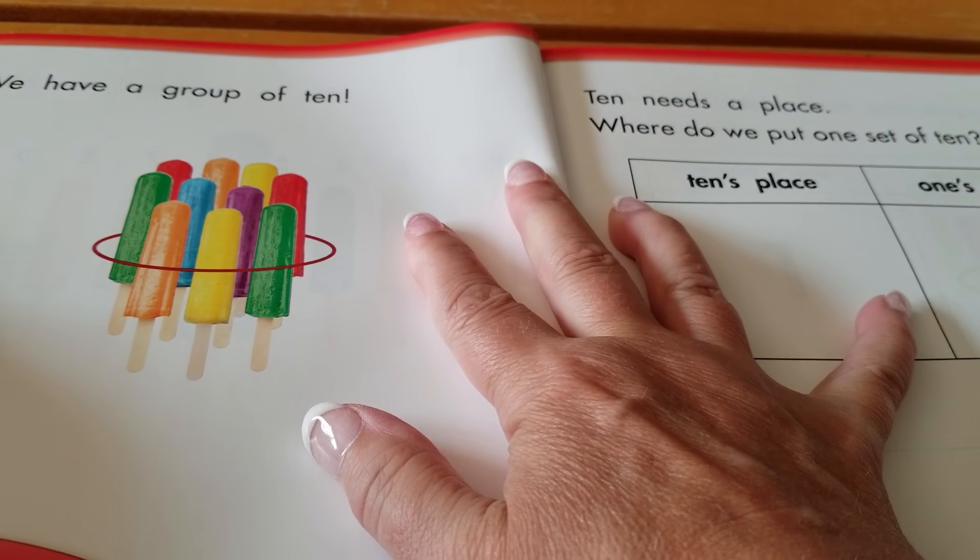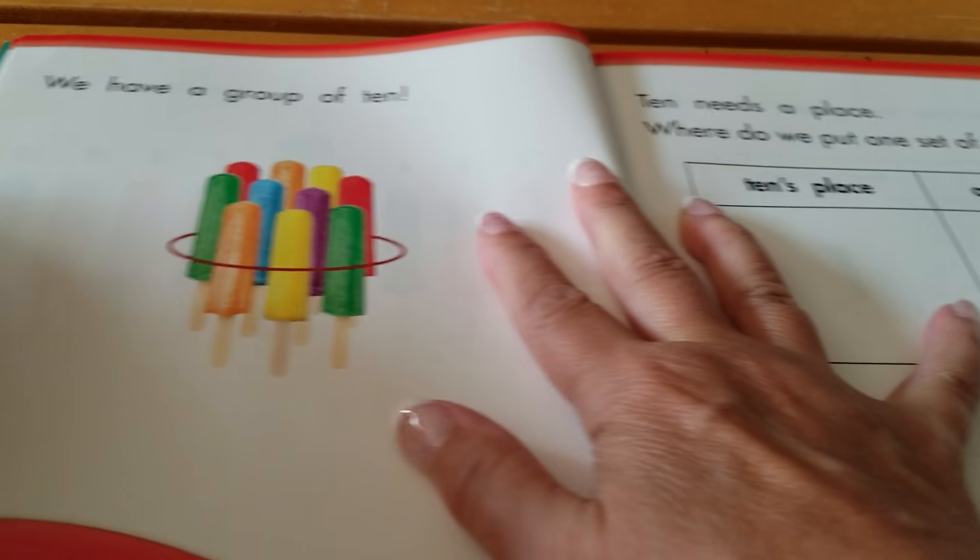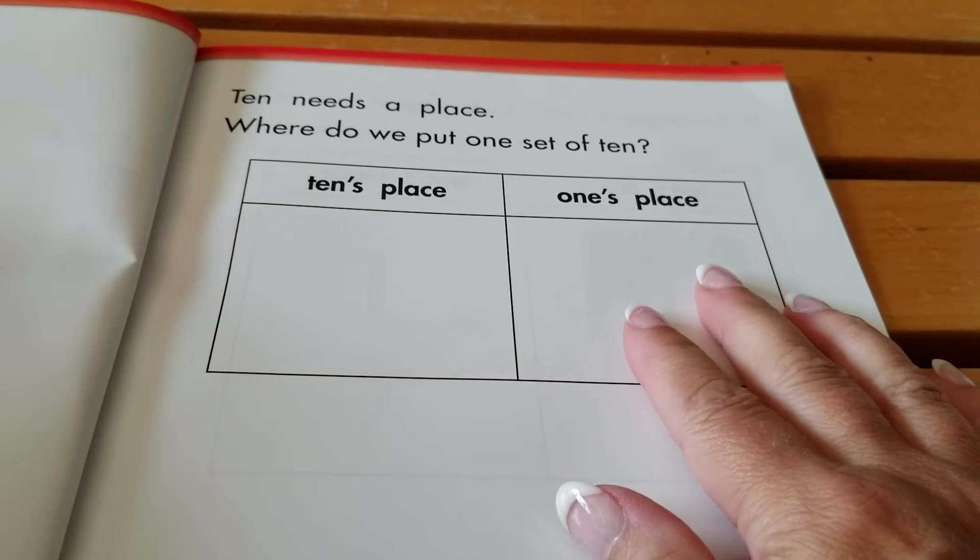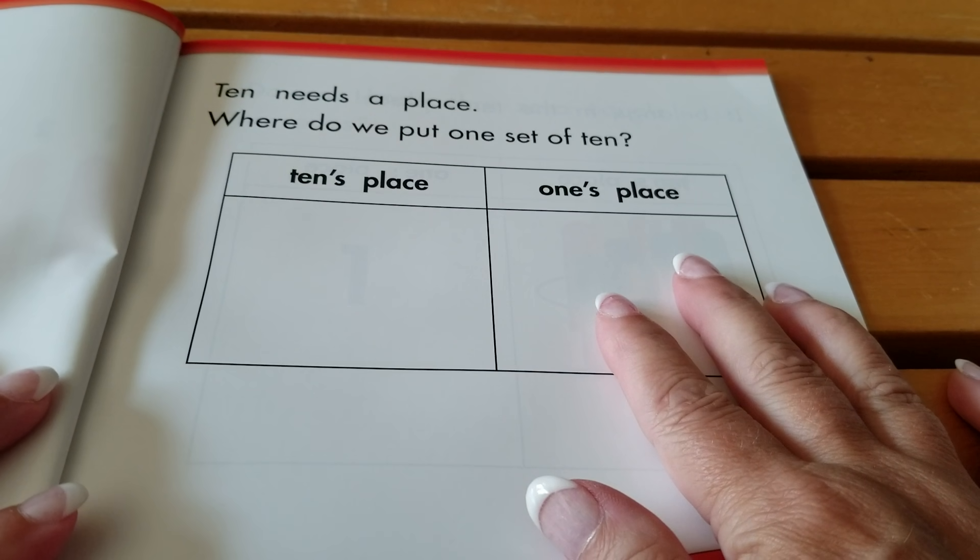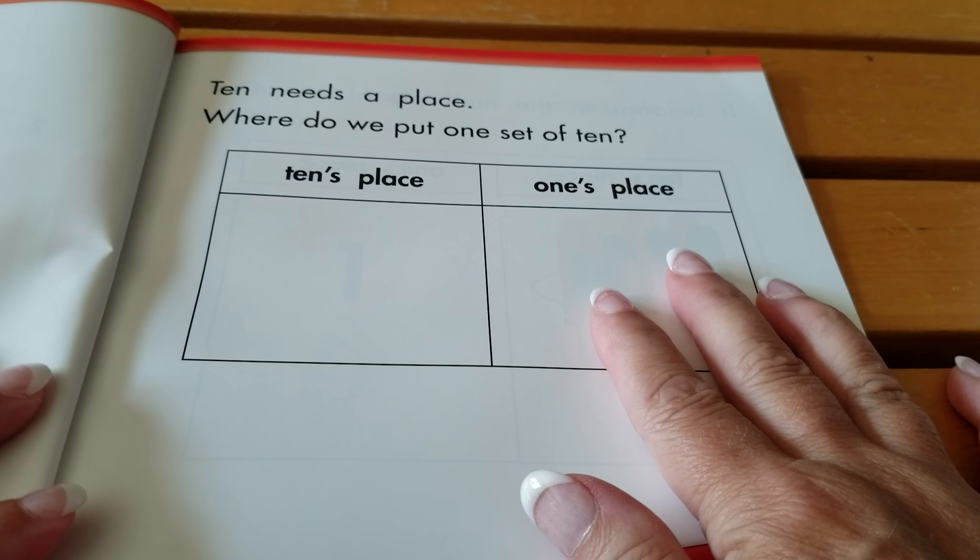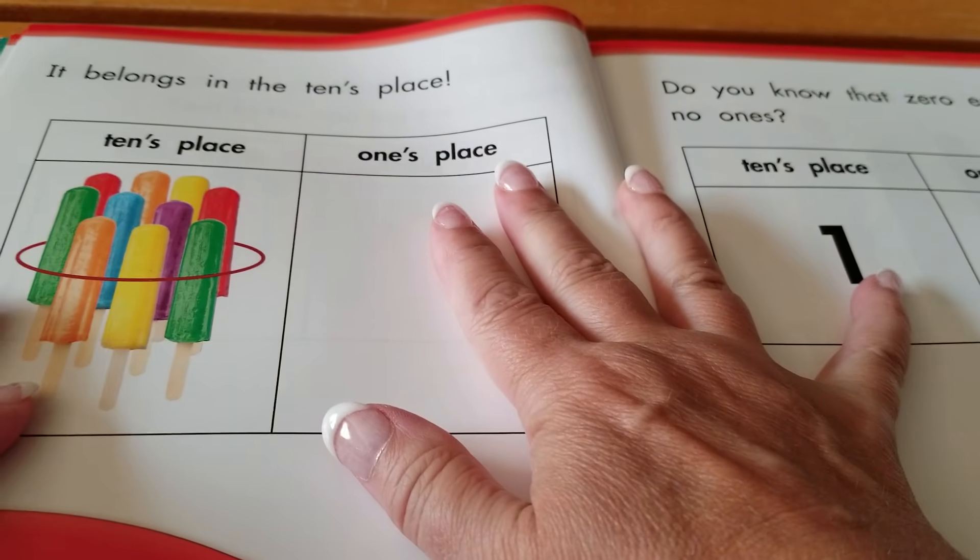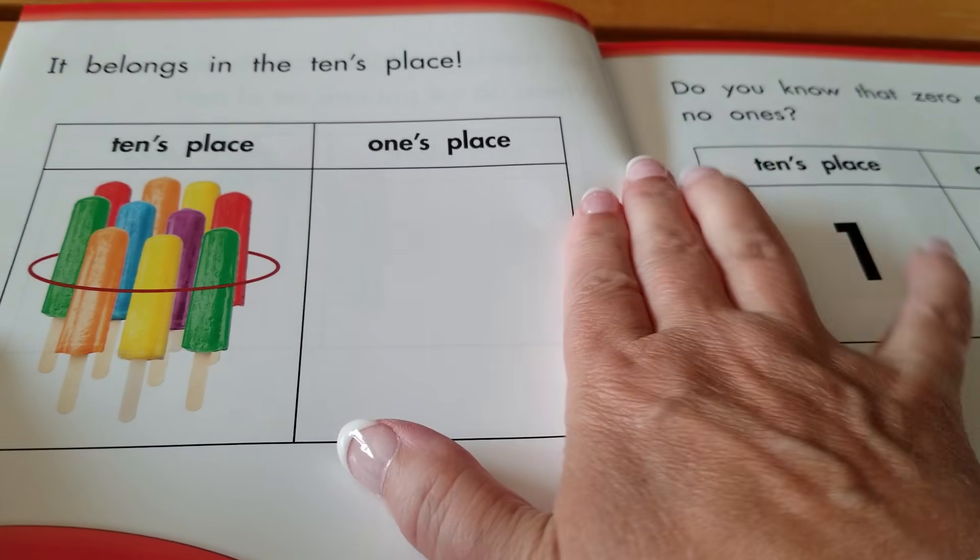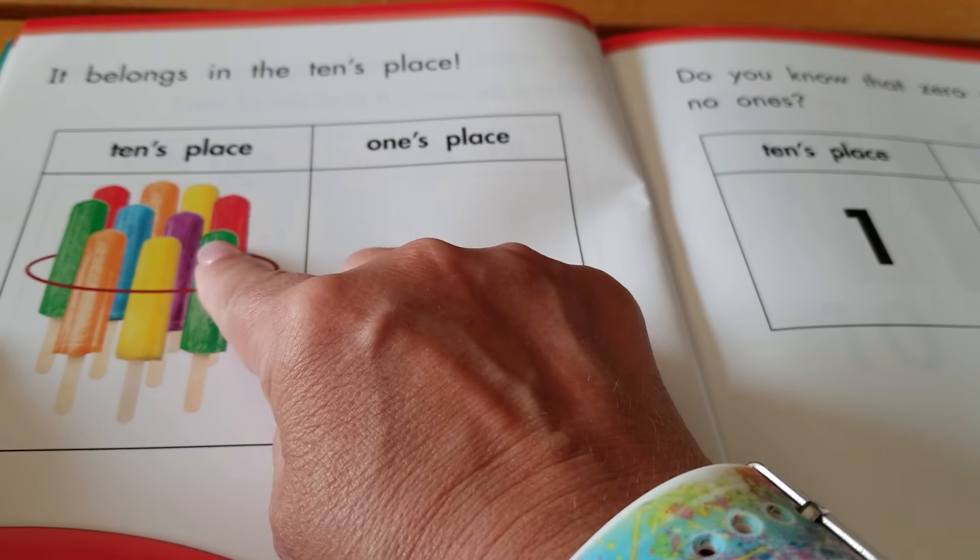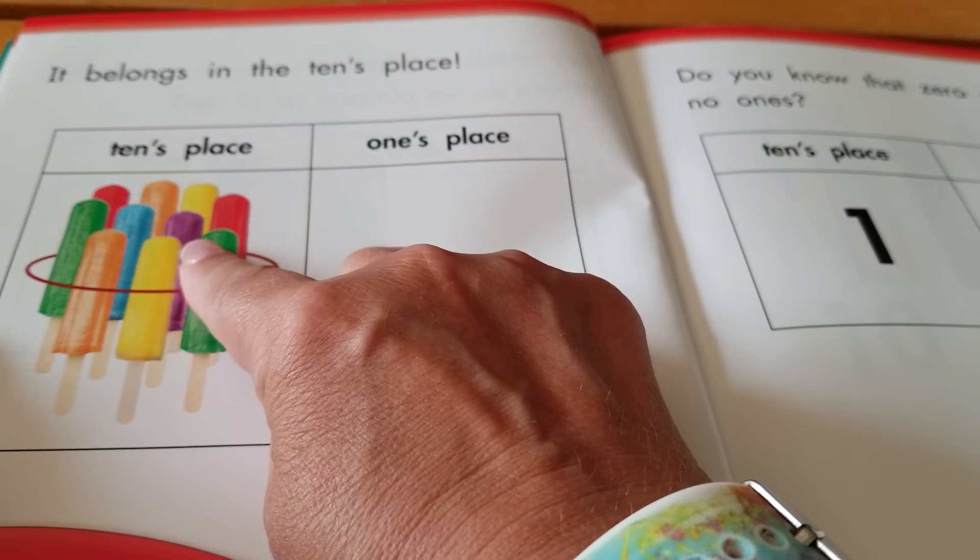We have a group of ten. Ten needs a place. Where do we put one set of tens? In the tens place or in the ones place? It belongs in the tens place. One group of tens belongs in the tens place.